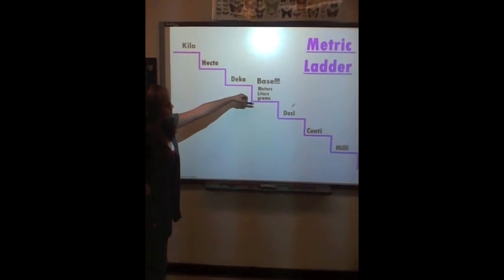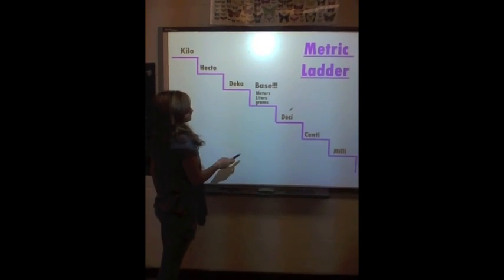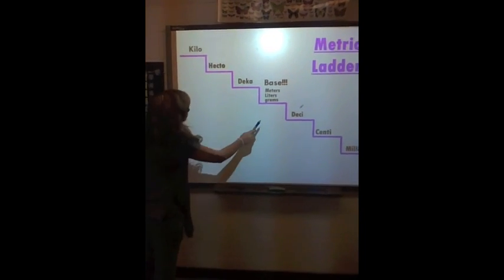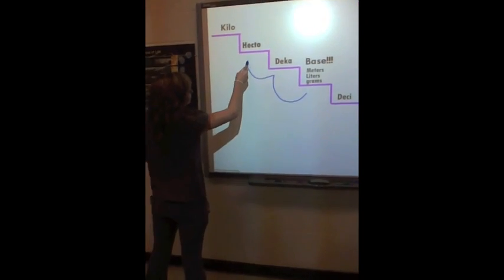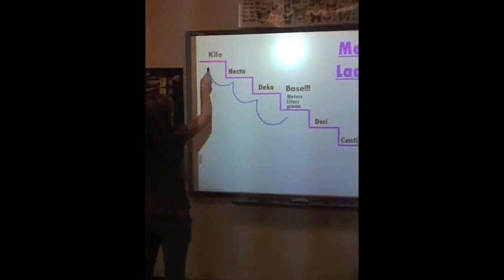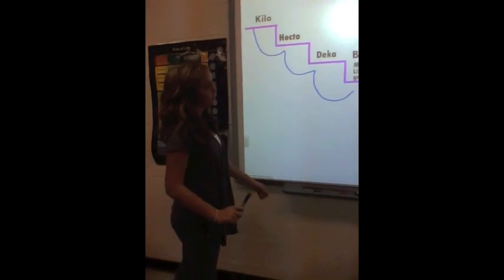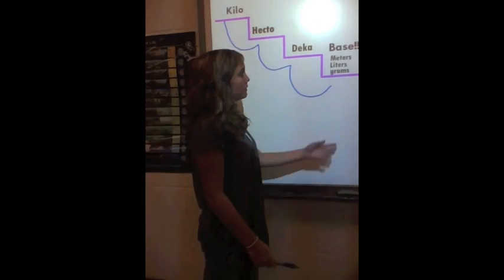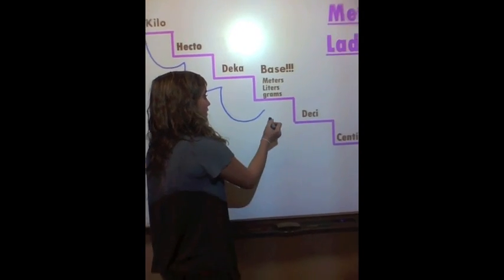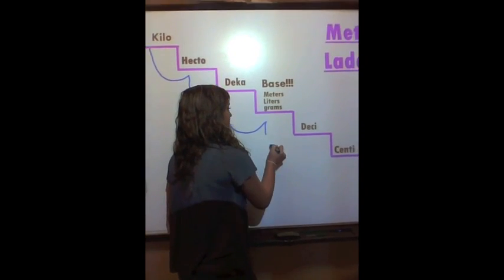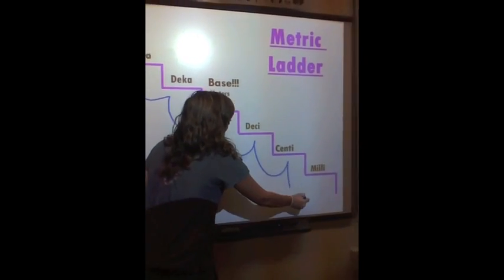We're going to start with the base: meters, liters, and grams. When you go up, you go to Deca, and then you go to Hecto, and then you go to Kilo. These are all abbreviations that can go before your bases. When you go down from the base, you say Desi, Centi, and Milli.